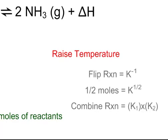Last but not least, if you flip your reaction, what happens to our equilibrium expression? It gets flipped — it goes to the negative 1 power. If we divide all our coefficients by 2, our coefficients go as exponents, so it would be to the 1/2 power. If we combine reactions, we have to multiply those two K's together.